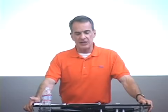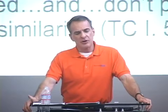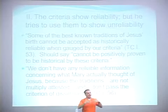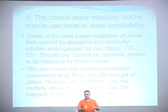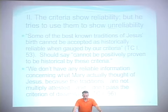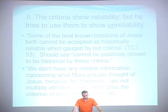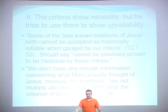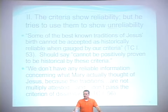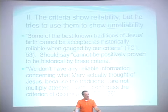The next major point is that the criteria, when properly used, show the reliability of traditions about Jesus. But Ehrman tries to use them negatively to show unreliability. The criteria can only be used to establish positively historical elements about Jesus, but Ehrman uses them negatively. For example, he says: 'Some of the best-known traditions of Jesus' birth cannot be accepted as historically reliable when gauged by our criteria.' Notice that's a negative use of the criteria, but the criteria can't be used negatively to establish non-historicity. They can only be used positively to establish historicity.